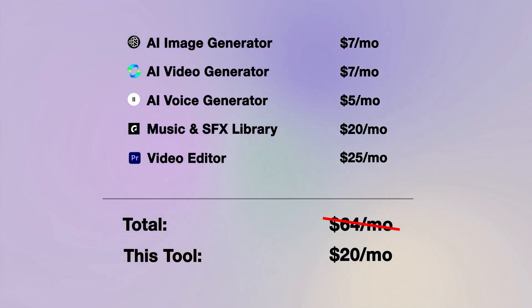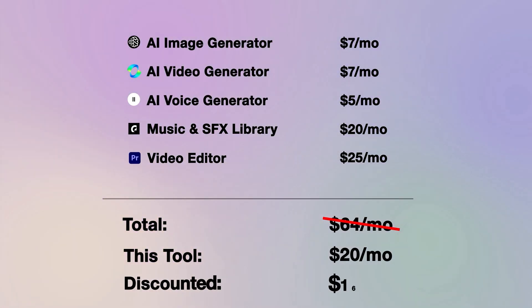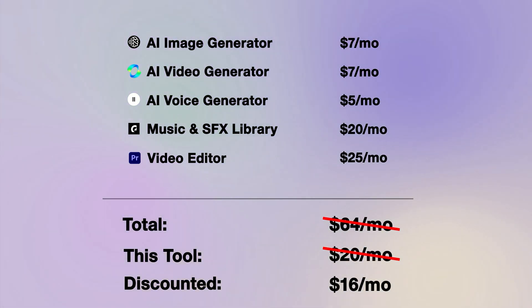That's saving you $44 off the $64 you would be paying using all of those separate tools. To me that's just way more beginner friendly because that's such a lower financial commitment for newcomers to start making their own AI videos. And with a further 20% off discount that you can get right now, that takes that $20 down to $16 a month — so that's now a $48 saving to the alternatives.